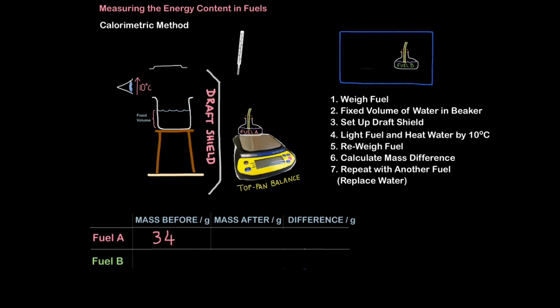Next I have to get a fixed volume of water in a beaker, so I'd use a measuring cylinder to measure water in a beaker. So it's a fixed volume, that has to be controlled in this experiment to keep it a fair test.